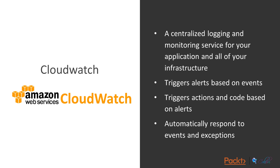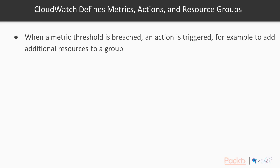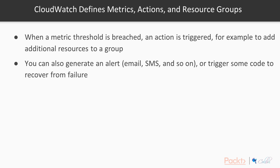CloudWatch allows you to automatically respond to events as well as exceptions, which is very important for autoscaling. CloudWatch lets you define metrics, actions, and resource groups. When a metric or threshold is breached, an action can be triggered — for example when you want to autoscale to add additional resources to a resource group. You can generate alerts via email, SMS, or push notifications, or trigger some code to recover from failure, such as running a Lambda to spin up resources, change a security group, or modify a load balancer config.